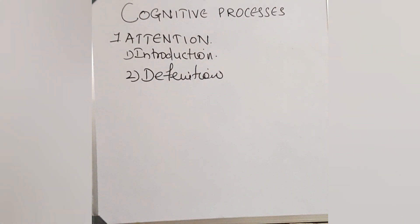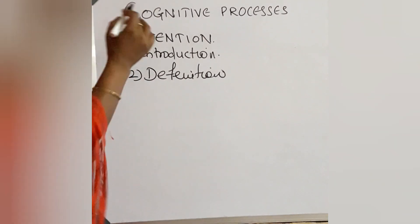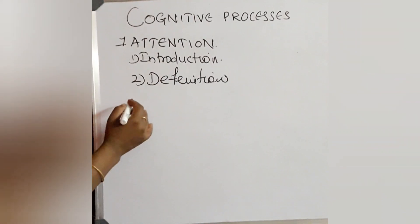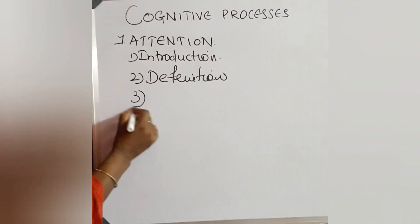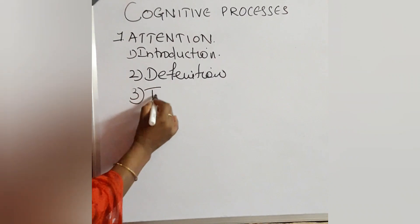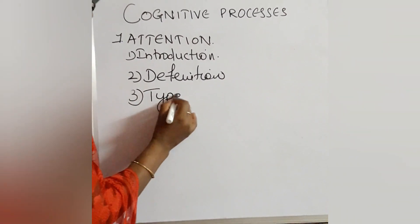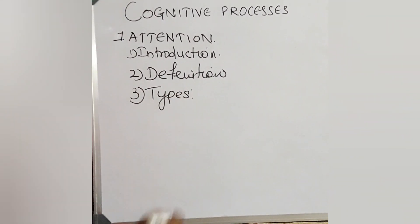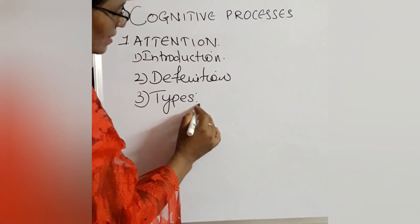Next one is, if any types are there under cognitive process attention, we have to write that one. So here third title is types of attention. There are two types of attention. One is,